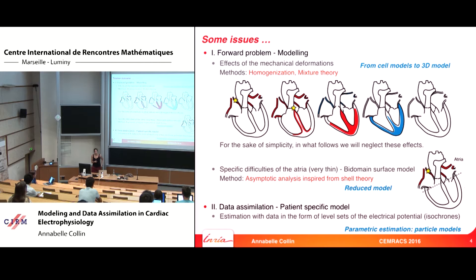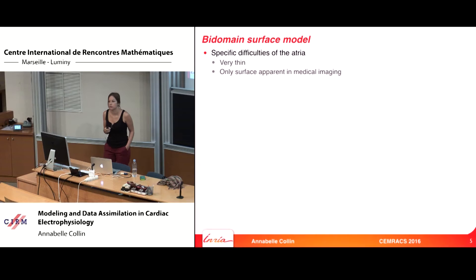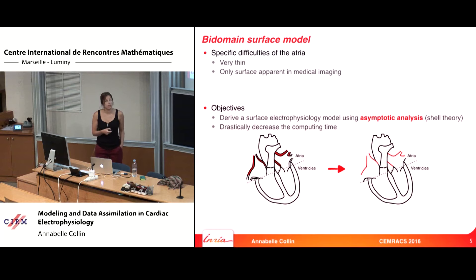After that, I will speak about data assimilation, because when you have a model, you want to adapt it to each patient, and for that you need to use available data. This will be the second part of my talk. The atria are very thin and appear only as a surface in medical imaging, which is why we want to derive a surface electrophysiological model and also decrease computing time.